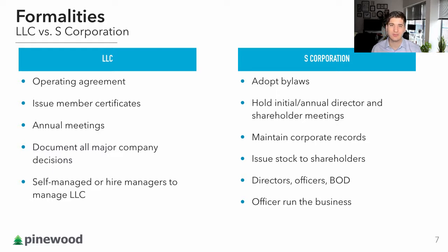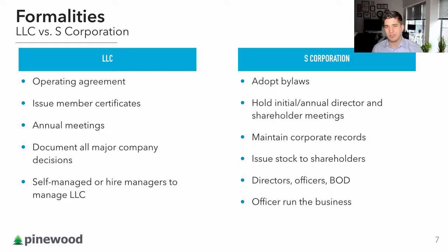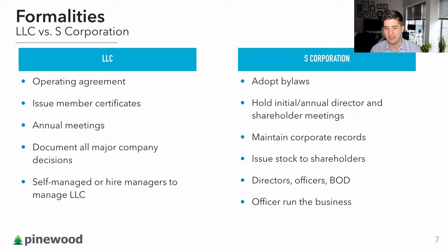As far as the S corporation, you need to adopt bylaws, which are very similar to the operating agreement — a document with principles that you need to run the company by. You need to hold an initial and annual director and shareholder meetings to keep everybody in sync and updated, maintain corporate records, and issue stock to shareholders. There are directors — a board of directors who don't necessarily participate in the business. Those responsibilities belong to officers: president, CEO, secretary. The board of directors can be your investors, people who guide major decisions and have voting power. Officers run the business essentially.